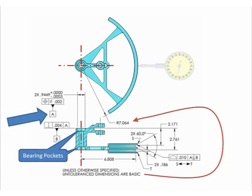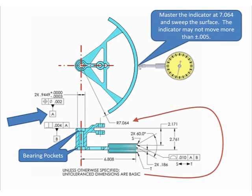One way you might think about inspecting this would be with a drop indicator. I would master the indicator at the 7.064, and then I could either sweep the critical radius with the indicator, or I could hold the indicator stationary and rotate the part underneath the indicator.